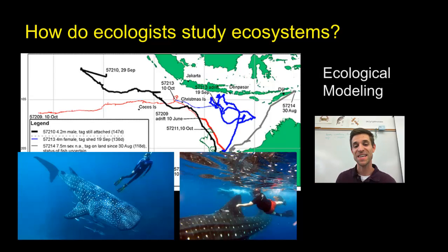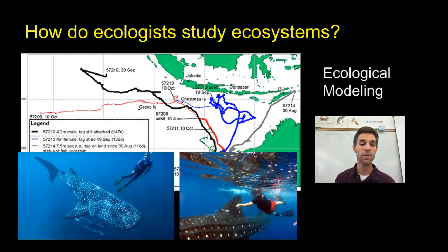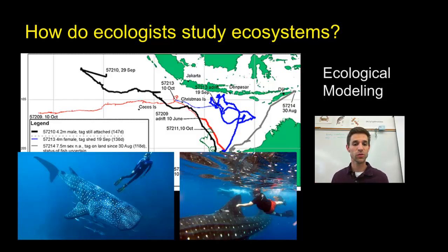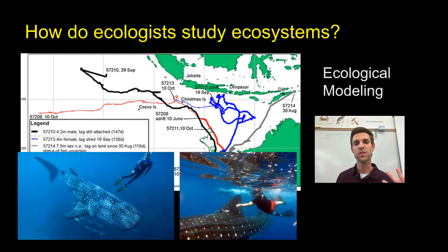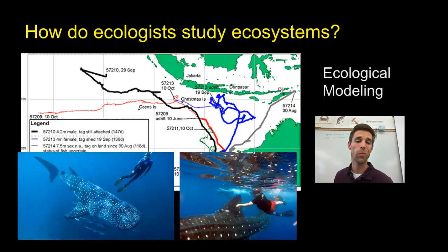One of the most interesting ways ecologists study ecosystems now, with a lot of technology, is through ecological modeling. This takes computers and sophisticated technology such as satellite imagery or GPS. This is an example of scientists tracking whale sharks — the largest fish in the world — with GPS trackers, trying to answer questions like: where do these sharks go, where do they spend their day, do they migrate to certain places every year, or do they spend time near the surface or deeper in the water? This is one of the most interesting ways ecologists study large or wide-ranging organisms, tracking them and gathering data to answer questions about how they live and interact with their ecosystem.